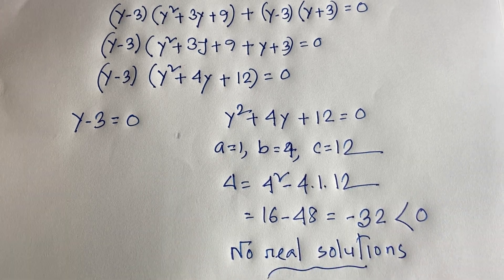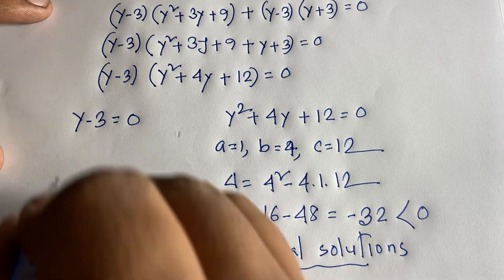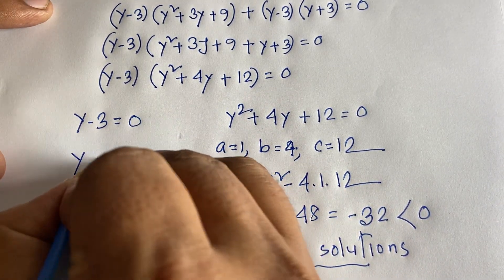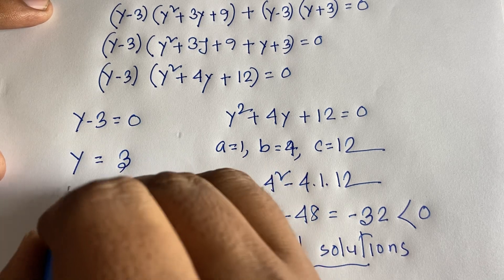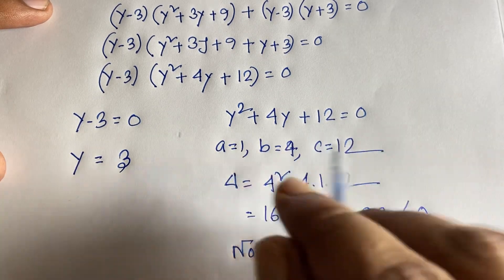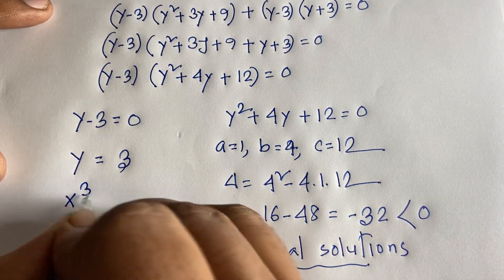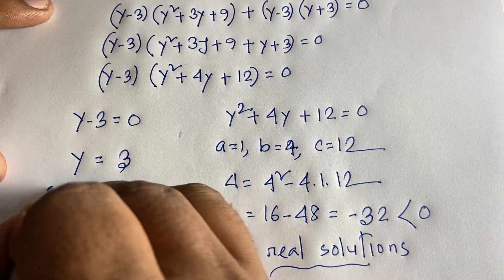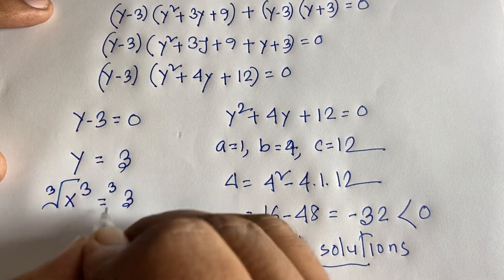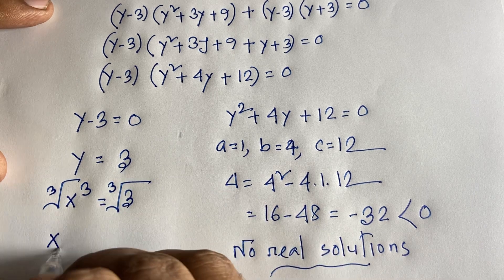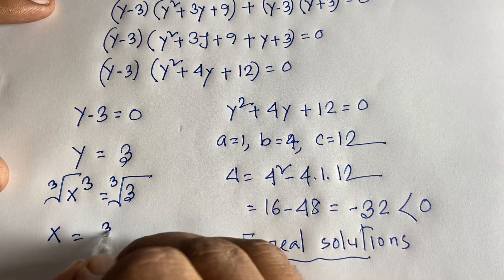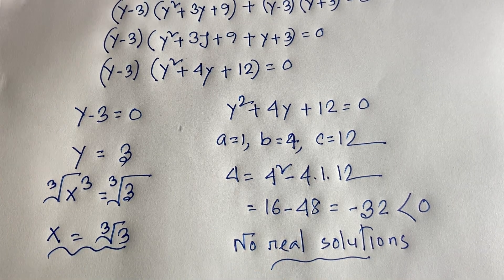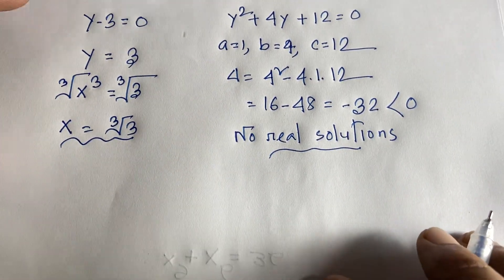From the first case, y − 3 = 0 gives y = 3. Since y = x³, we have x³ = 3. Taking the cube root of both sides, x = ∛3. This is our final answer to this Math Olympiad question.